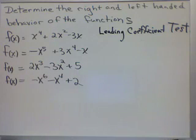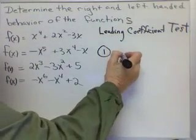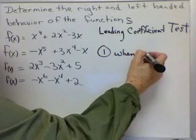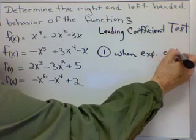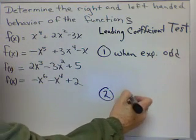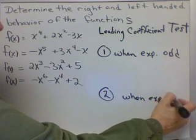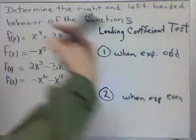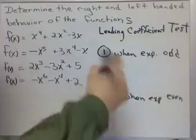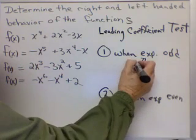So, the leading coefficient test has a rule. And there's two basic rules. One, when the exponent is odd. And rule two, when the exponent is even. Now, what exponent am I talking about? The highest degree exponent. Because these problems have more than one exponent. So, highest degree exponent. Remember that I want high degree here.